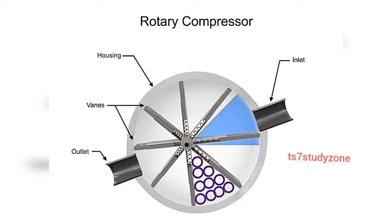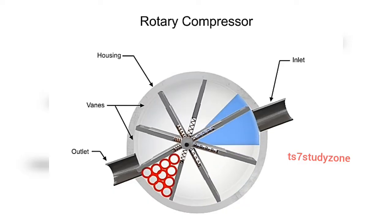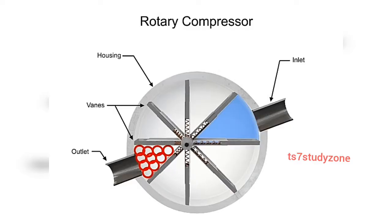As the vanes rotate, they retract, causing the chamber to get smaller and compress the air. Air exits at the smallest chamber.